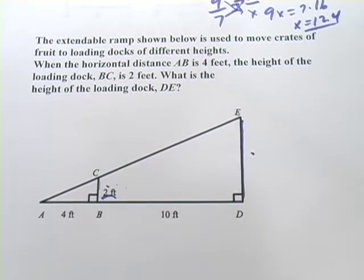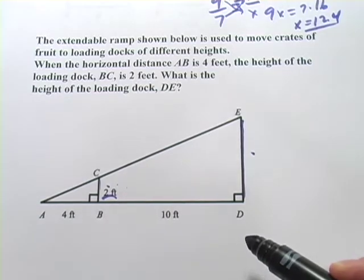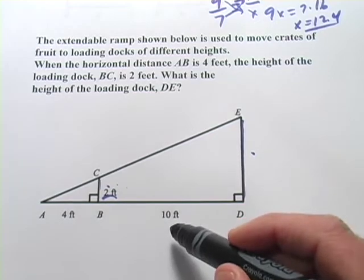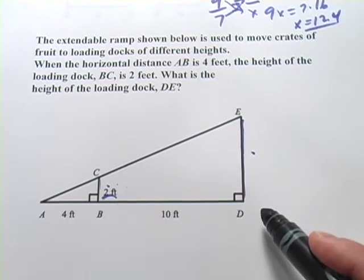The other sides we have are for the bottoms and here you have to be a little bit careful. You might think that the little triangle is four and the big triangle is ten but it's not. The big triangle is that whole length. It's 14.